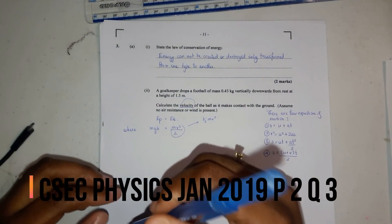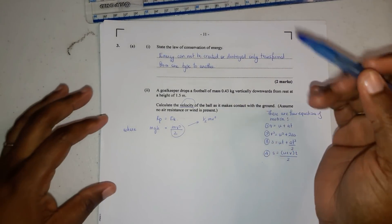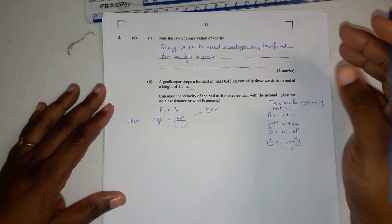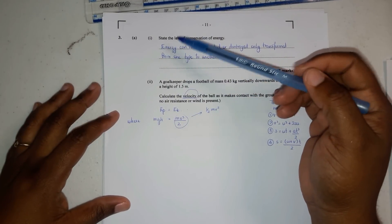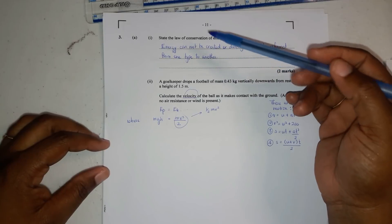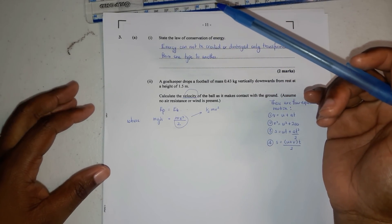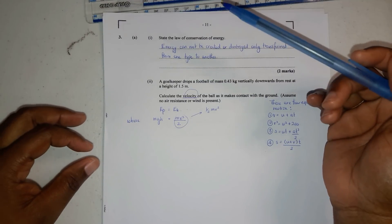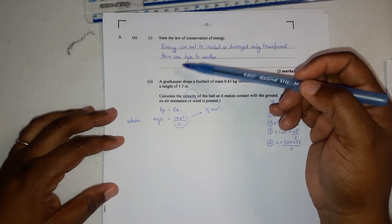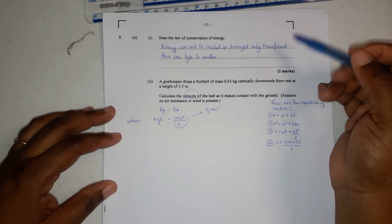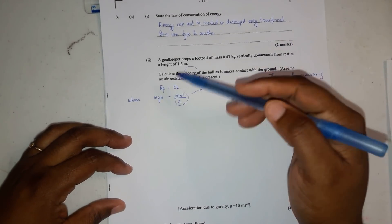Okay, so now we're on question three for January 2019 physics. State the law of conservation of energy. We've learned this in first form, second form. Energy cannot be created or destroyed, only transformed from one type to another.